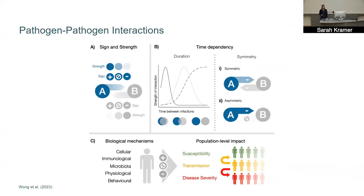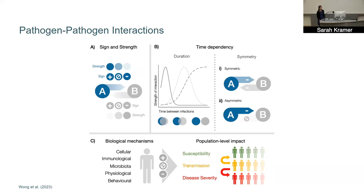I want to start by discussing what we mean when we say a pathogen-pathogen interaction. This figure is from a recent paper from our lab, made by Laura, one of our PhD students. When we say there is an interaction between two or more pathogens, we mean that being infected with one pathogen is going to alter your susceptibility to, or the transmissibility of, or the severity of an infection with another pathogen.